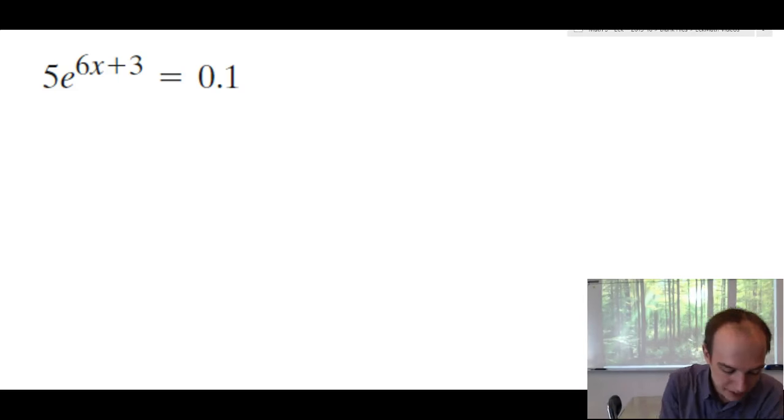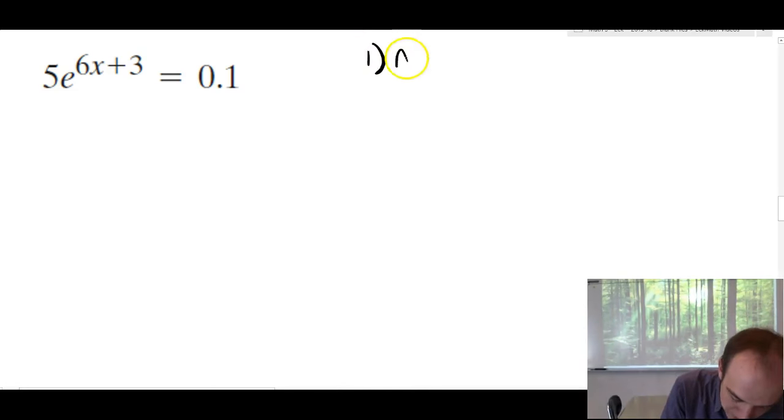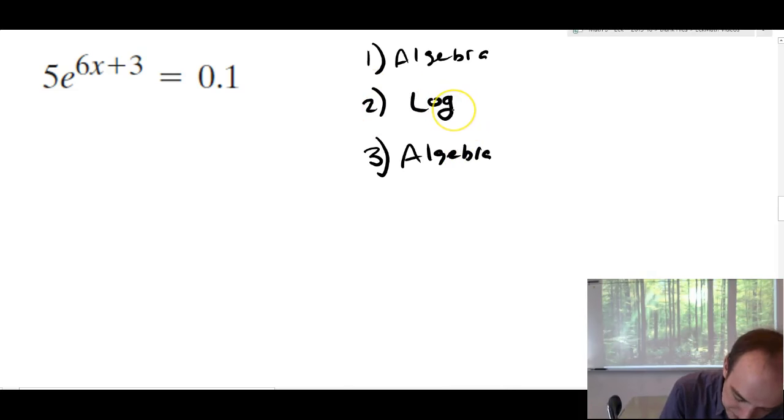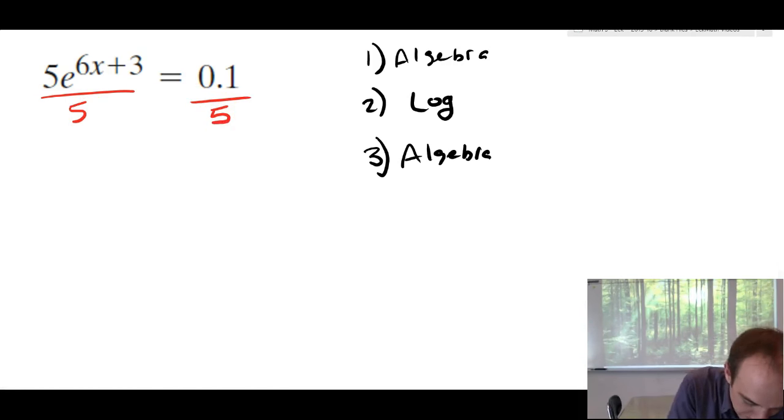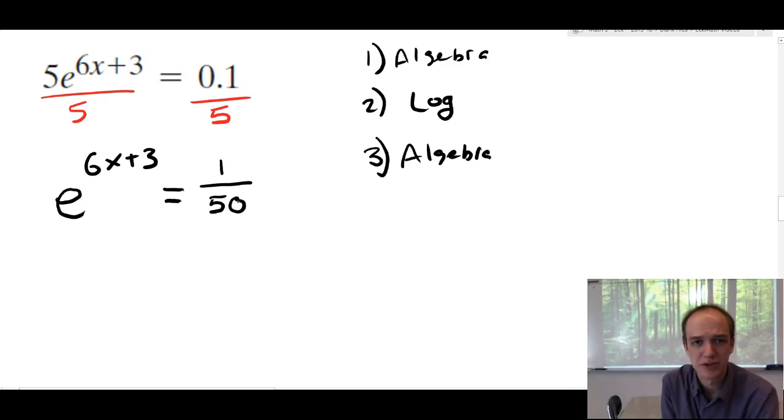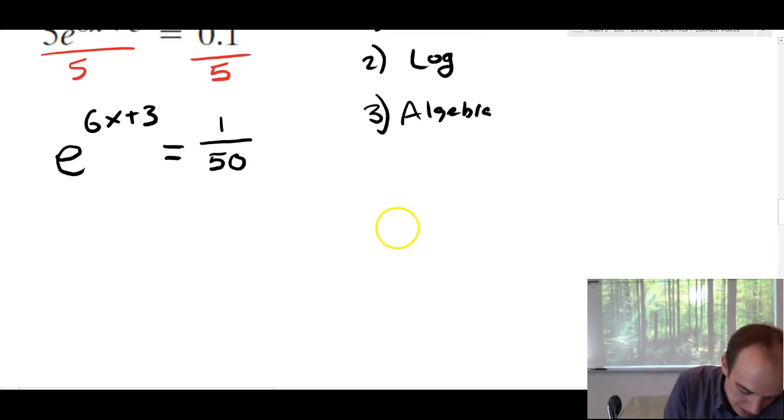Here's a problem that's a little more complicated. Step one of this problem is algebra. Step three of this problem is algebra. Step two is the log. So, we're not going to be able to do anything with logs until we've done some algebra. And the first algebra that we have to do is just divide everything by five. So, we're going to get E to the 6x plus 3 is 0.1 divided by 5. Is that the same as 1/50? I'm going to leave it as a fraction. You'd be okay leaving it as a decimal.